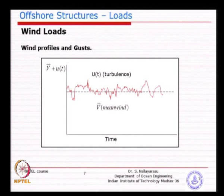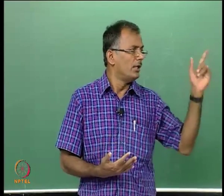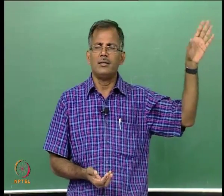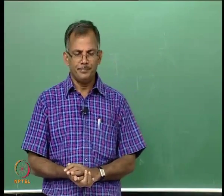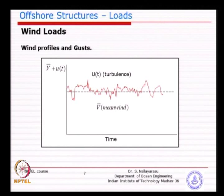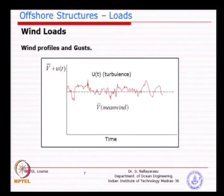Now let us look at loads arising from wind. You could see a histogram showing variation of wind velocity — the meteorological department measures this with velocity measurement devices. The basic idea is that wind is not a constant velocity as many normally think. Wind also varies with time, and the fluctuation behaves like a random signal. You can see there is a fluctuating component on top of a steady component — the dotted line shows the steady component on which the fluctuating component changes.